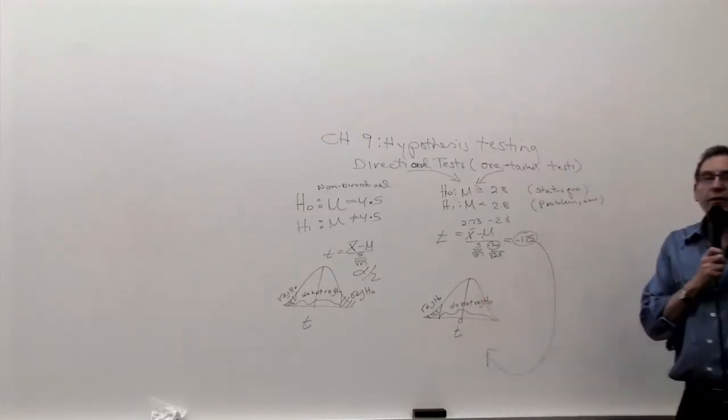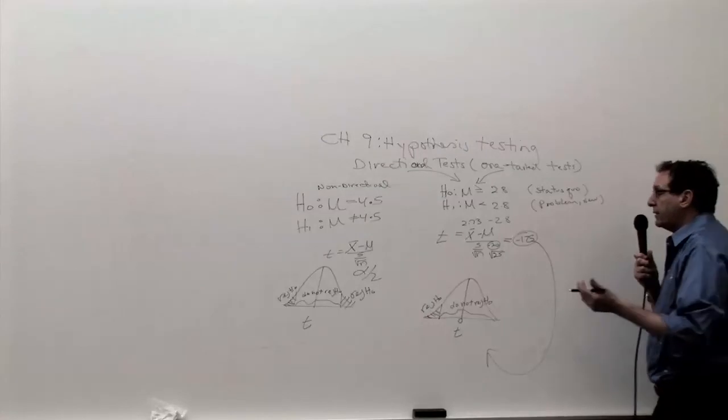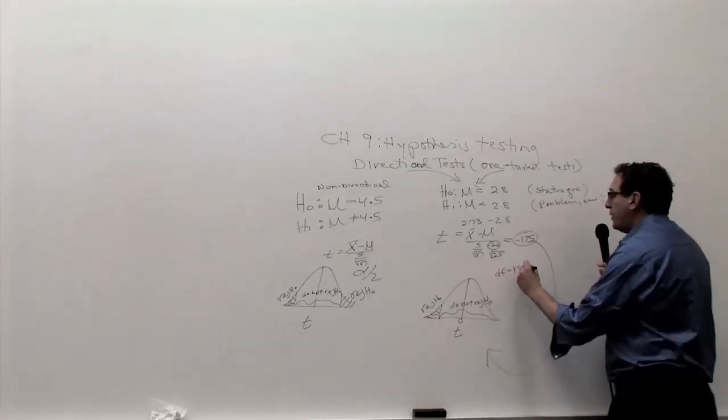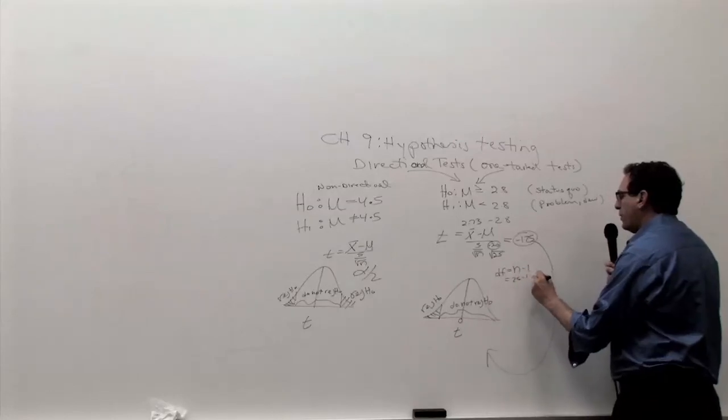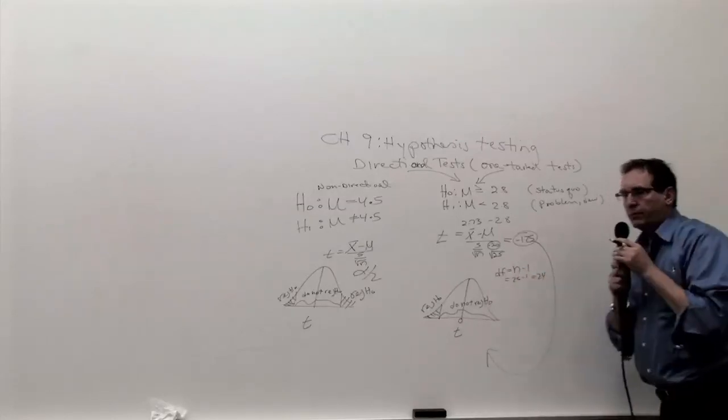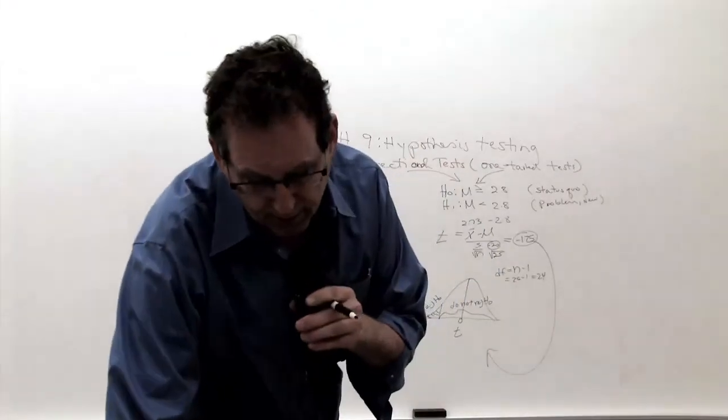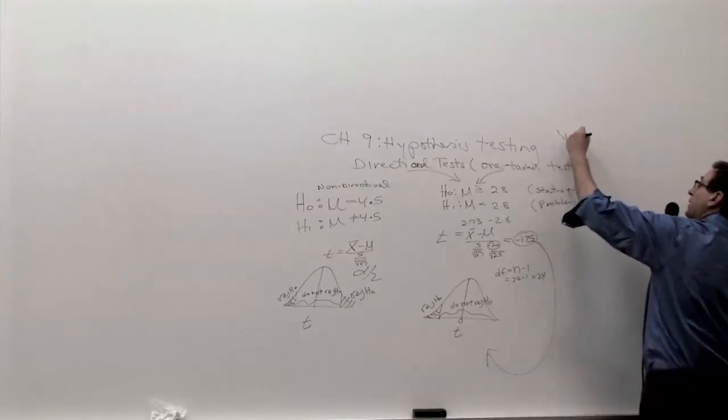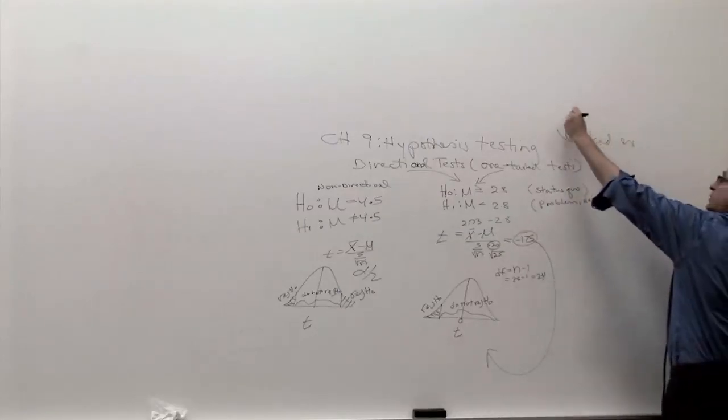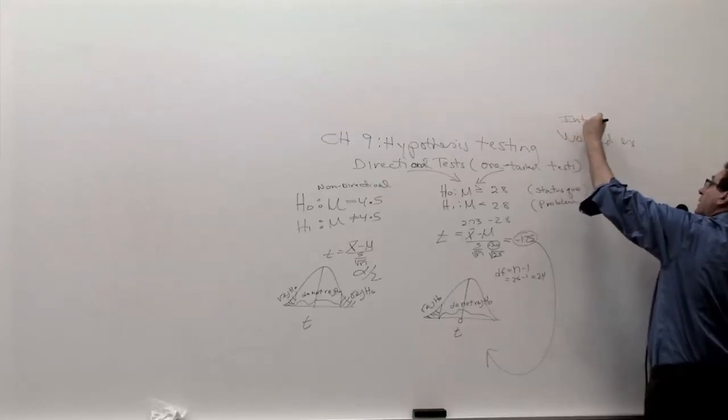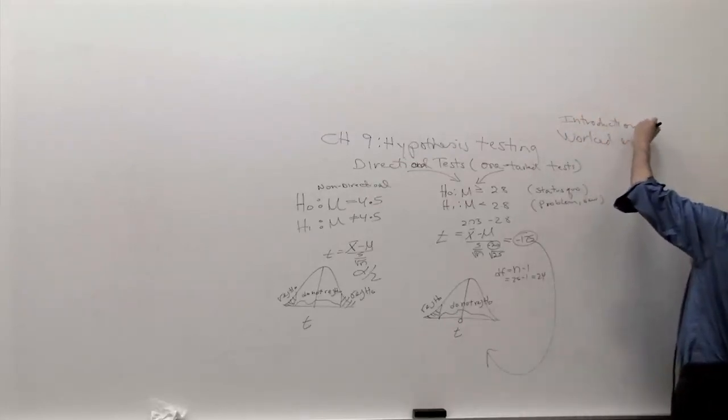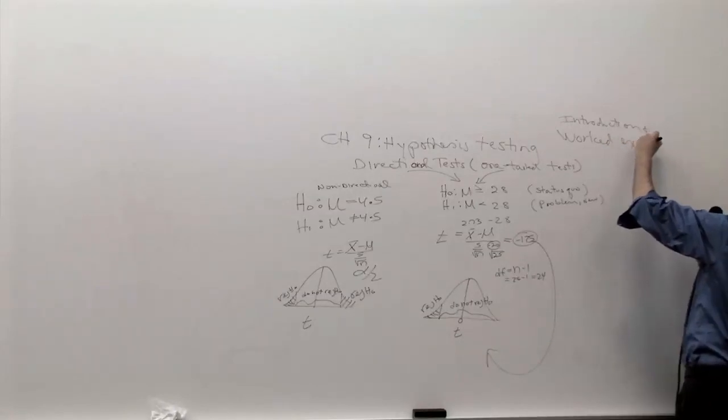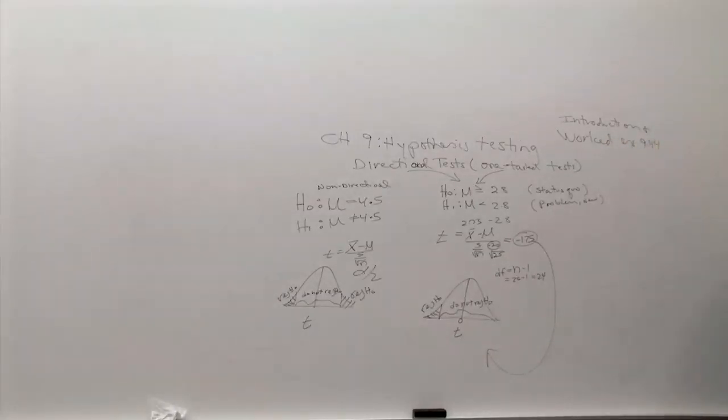So that's the change of the picture of step number three. What about the change of the mathematics of step number three? The degrees of freedom is still going to be n minus one, which is 25 minus one or 24. By the way, for the purpose of the videotape, I should write down. This is worked example number 9.44. Worked introduction and worked example 9.44. Did you say something? Point what? Oh, it's 9.44.